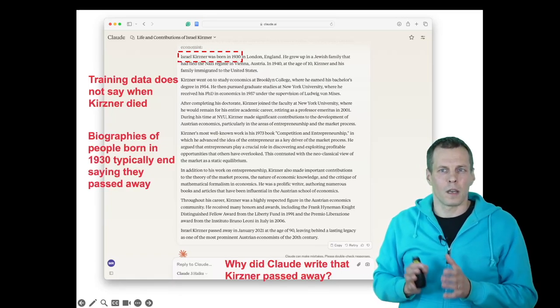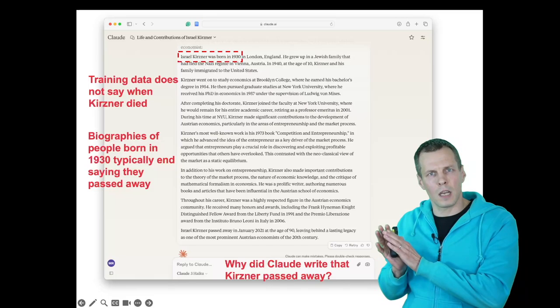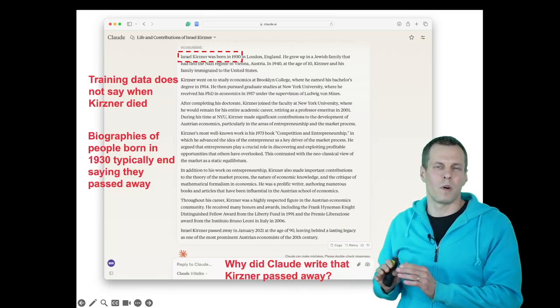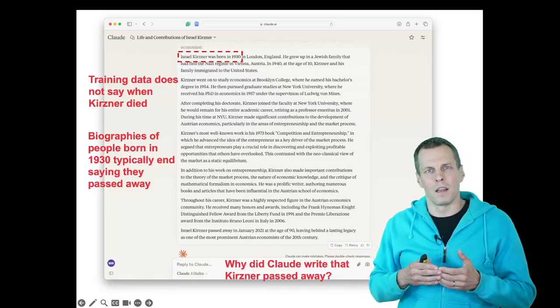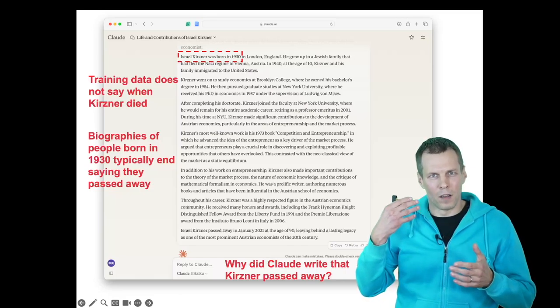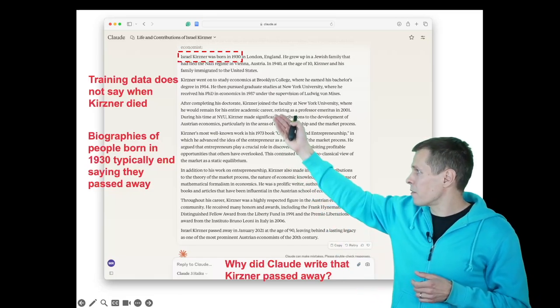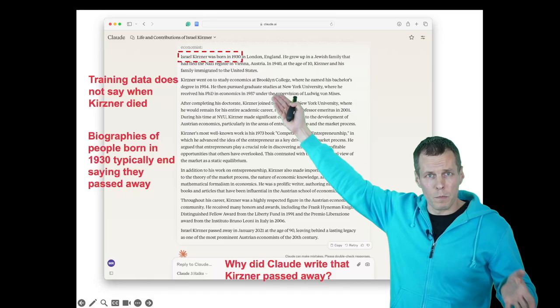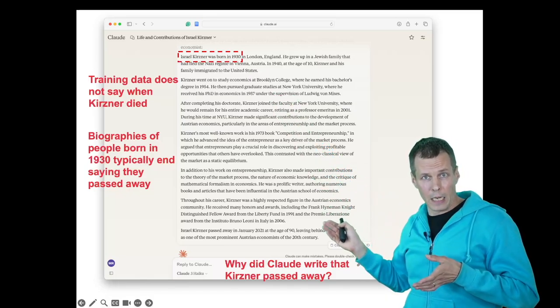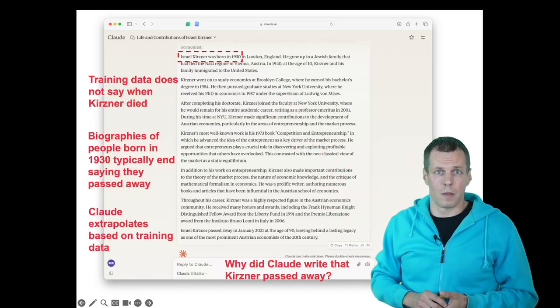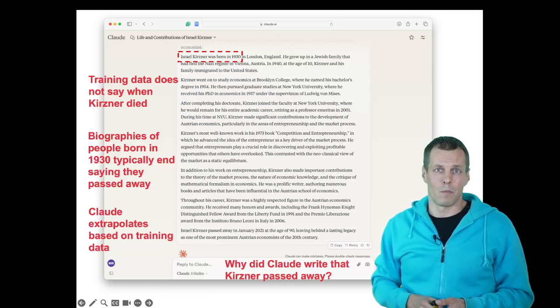And most of those biographies end with explaining when the person passed. So the language model does not have information about the passing of Kirzner, but it has seen a general pattern that when the biography starts by telling that the person was born in 1930, then the likely ending for the biography is just that the person died somewhere in the 2020s, for example.